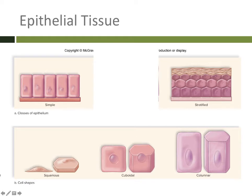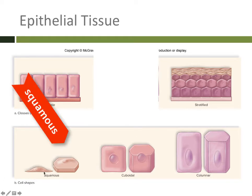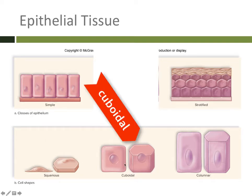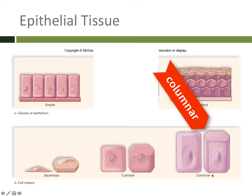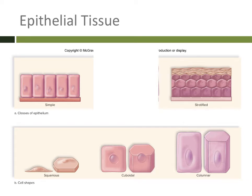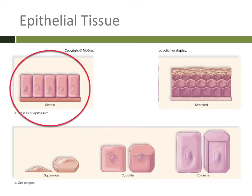We also use the shape of the cell. Squamous cells are very thin and flat, like little pancakes. Cuboidal cells are about as wide as they are tall. And columnar cells are like little columns — they're very thin and tall. We use these two ways to identify epithelial tissue together. For example, if you have a type of tissue that is one cell layer thick and is very flat, that would be simple squamous epithelial tissue.